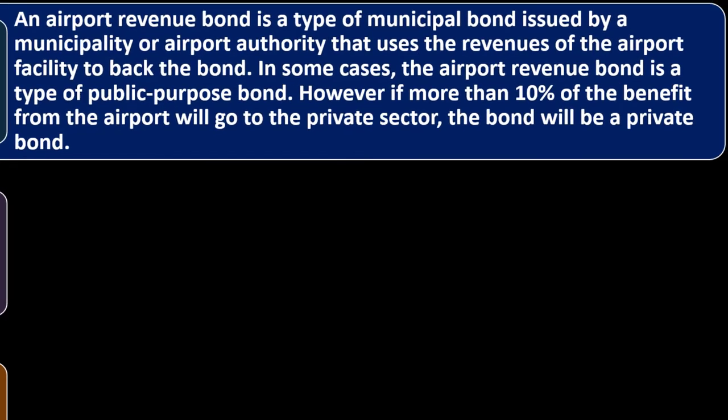Several types of revenue bonds are commonly issued by state and local governments. An airport revenue bond is a type of municipal bond issued by a municipality or airport authority that uses the revenues of the airport facility to back the bond. In some cases, the airport revenue bond is a type of public purpose bond; however, if more than 10% of the benefit from the airport will go to the private sector, the bond will be a private bond.